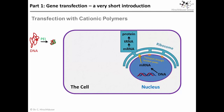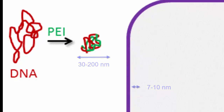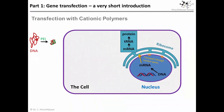DNA condensation also protects the molecule from degradation. But how can such an adduct — the diameter of which is approximately 100 times larger than that of the phospholipid bilayer — pass through such a membrane? The cellular membrane can engulf the DNA-vector adduct and form an endosome around it, which is then transported into the cell.